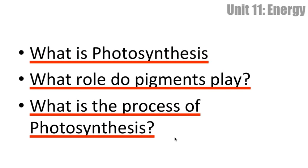Quick review: What is photosynthesis? It's the process that plants go through to take sunlight, water, and carbon dioxide and make glucose and give off oxygen. What role do pigments play? They are light-absorbing, so they absorb energy to excite electrons. And what is the process of photosynthesis? The light reaction requires light, energy, and water, gives off oxygen, and makes NADPH and ATP, which go on to the dark reaction. The dark reaction also needs carbon dioxide, and that process creates glucose.